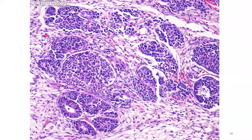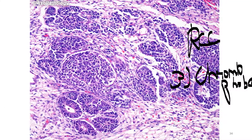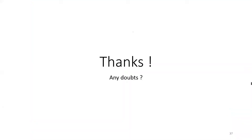This final slide is also RCC, the chromophobe variant. Small cells are seen getting deposited into the interstitium and other structures, giving a malignancy-like appearance. This concludes the session on histopathology of the renal system.